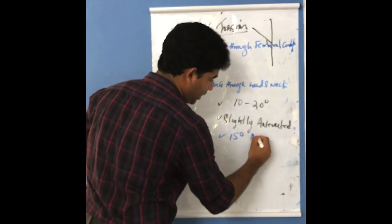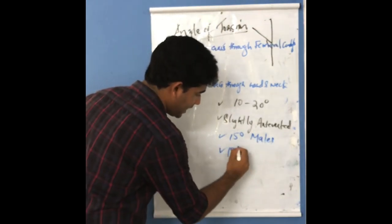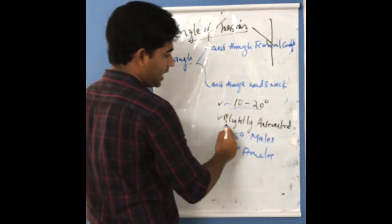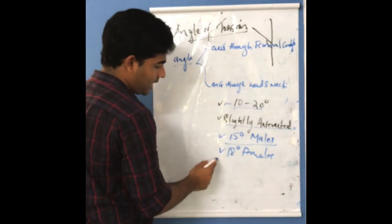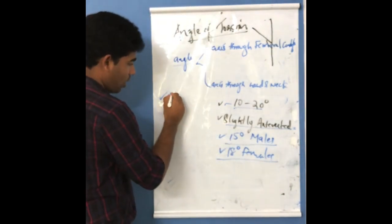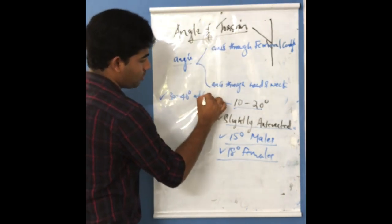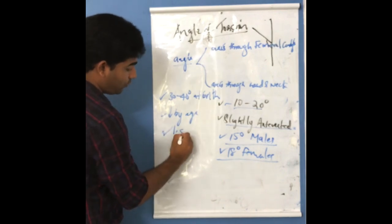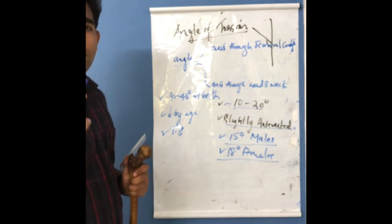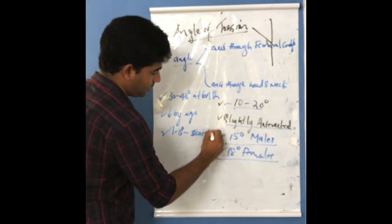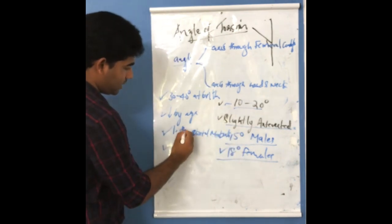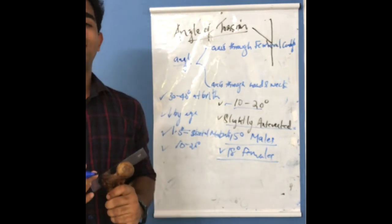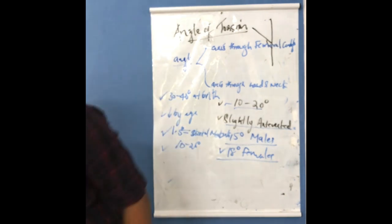The angle of torsion is about 15 degrees in males and 18 degrees in females. The angle of torsion is approximately 10 to 20 degrees - a range - as the femur is slightly anteverted. The angle of torsion is about 30 to 40 degrees at birth and decreases by age, approximately 1.5 degrees per year, until skeletal maturity, finally becoming the 10 to 20 degree range.